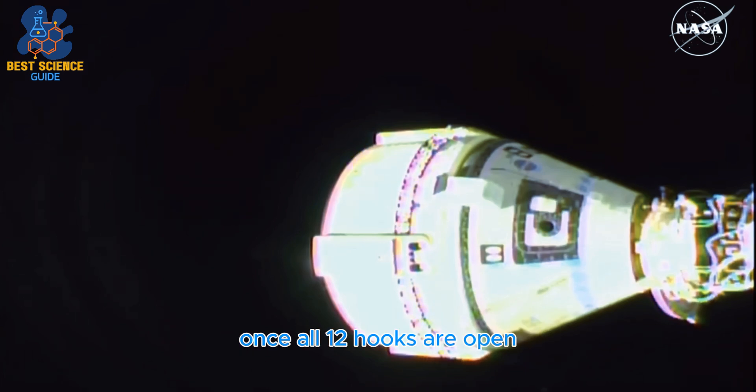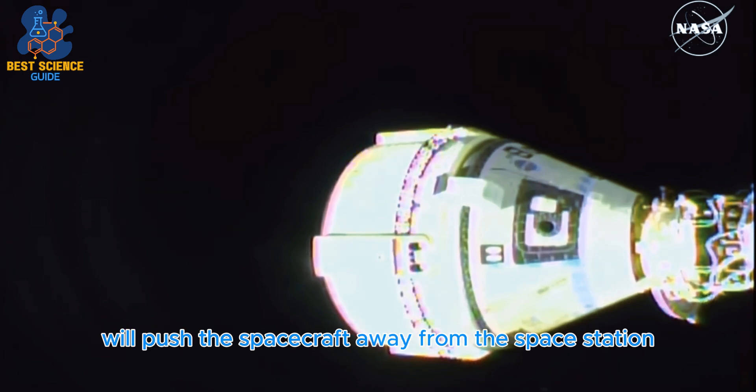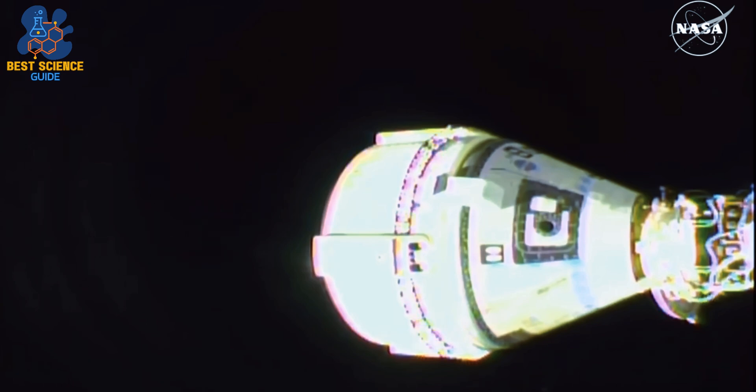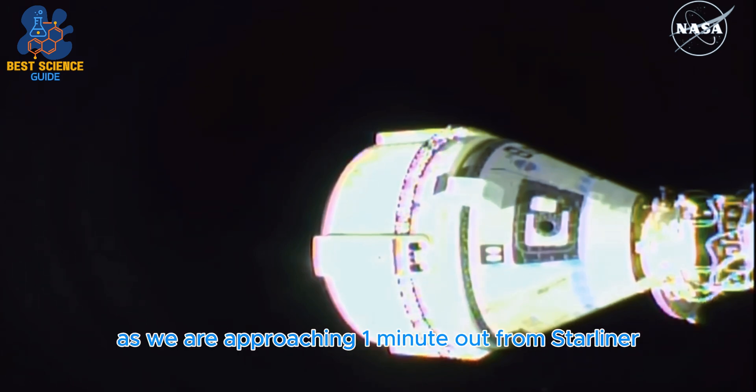Once all 12 hooks are open, springs on Starliner's docking ring will push the spacecraft away from the space station. Flight Director Chloe Marion just asked for quiet in the room as we are approaching one minute out from Starliner undocking.